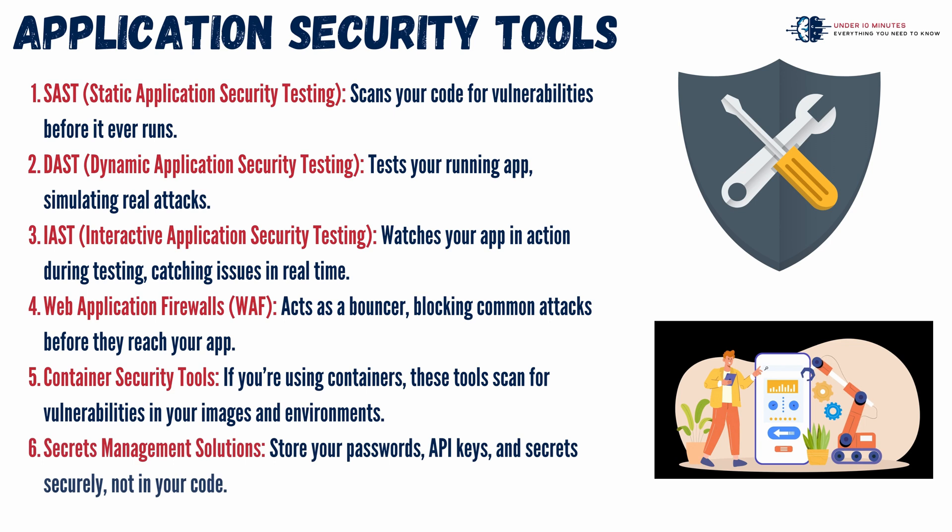Manually testing applications for security flaws can be cumbersome, and that's where security testing tools come in handy. Tools and techniques like SAST scan source code for flaws before it ever runs, while DAST tests your live application by mimicking actual attacks. IAST goes even further by monitoring your app in action during testing to catch vulnerabilities in real-time. Web application firewalls act like gatekeepers, filtering out common threats before they reach your system. For containerized environments, specialized tools help identify risks in container images and configurations. And when it comes to sensitive credentials, secrets management solutions ensure passwords and API keys are stored securely, keeping them out of your codebase. Together, these tools build a solid automated shield around your app.